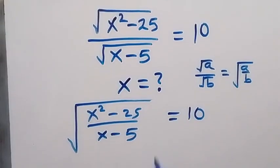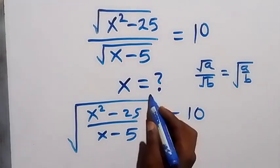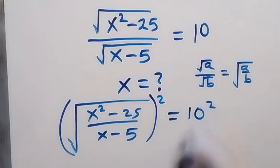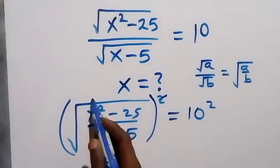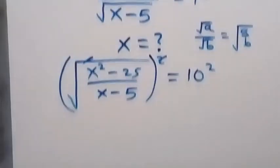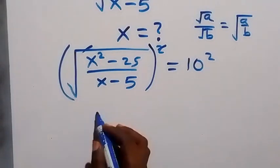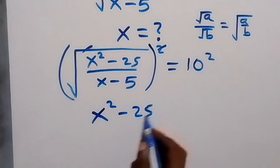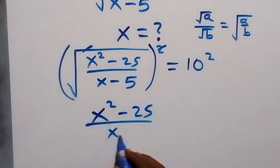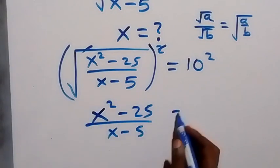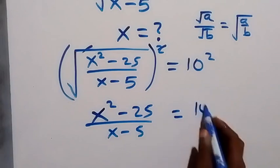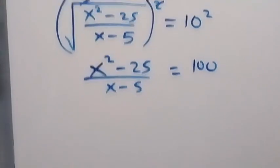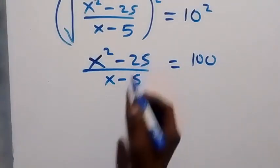In the next step, we take the square on both sides. Squaring cancels the square root, so we get x squared minus 25 over x minus 5, which equals 10 squared, which is 100.